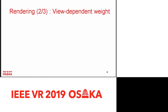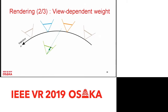The blending weight alpha is determined as follows: given the desired viewpoint and desired ray, we intersect the desired ray with the camera circle and determine the camera pair. We then connect the optical centers of these three viewpoints and compute relative angles between them. The final blending weight is simply a ratio between these angles. It's quite simple.